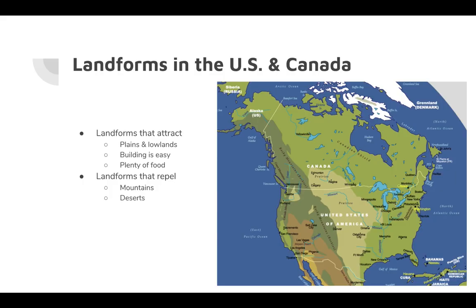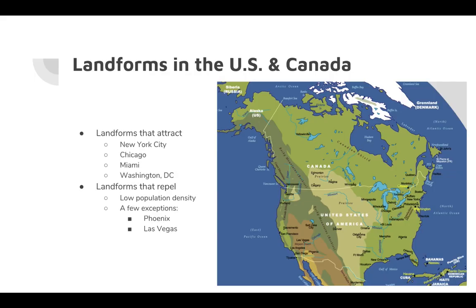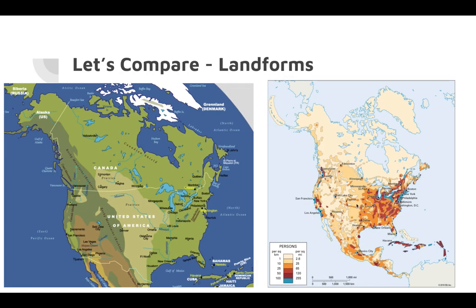Mountains and deserts also have a lack of water. Looking at our cities — New York City, Chicago, Miami, and Washington DC — they are all located on land that's pretty low-lying. On the population density map, not many people live in the mountains or deserts. There are some exceptions: Salt Lake City is in the desert and mountains but has a lake as a water source; Denver is on the edge of the Rocky Mountains; Phoenix and Las Vegas are in the desert but have created water sources. Los Angeles is in the foothills of the mountains, which makes it a low-lying area near a water source.